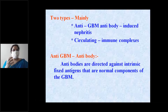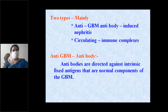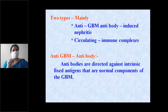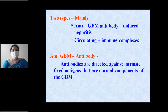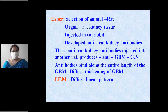Antibodies in the glomeruli are produced due to intrinsic fixed antigens — antigens of the DNA or nuclear proteins — which are expressed. Antibodies produced against these can cause injury to the glomerular basement membrane.